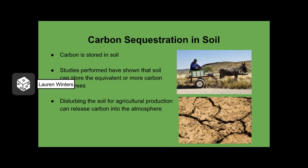The Earth is constantly undergoing a cycle of storing and releasing carbon dioxide. As we disrupt the soils of our Earth for practices such as farming, we are releasing more and more carbon dioxide at faster and faster rates, beginning to increase the amount of greenhouse gases in our atmosphere, and therefore increasing global temperatures.